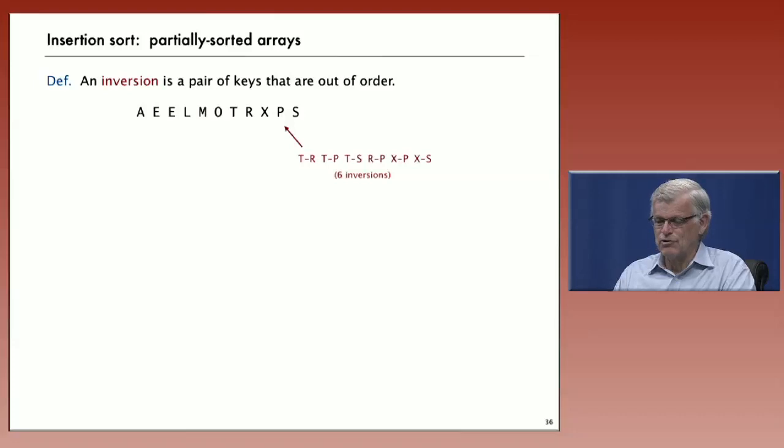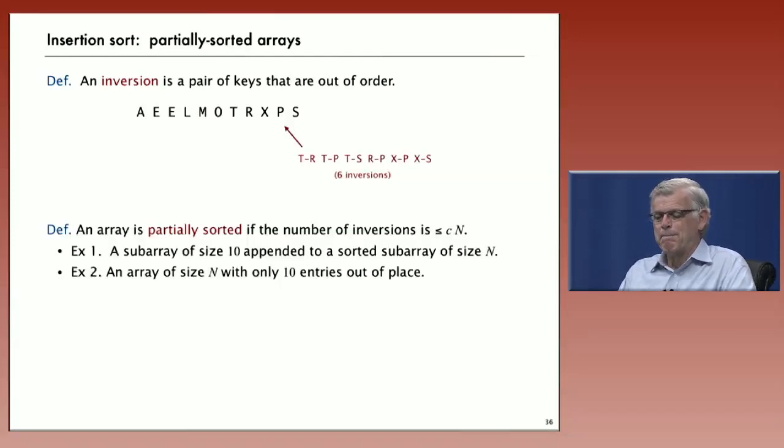So this array has six inversions. T and R are out of order because R should go before T, T and P are out of order, and so forth. This array has six inversions. And we define an array to be partially sorted if its number of inversions is linear, if it's less than some constant times N.